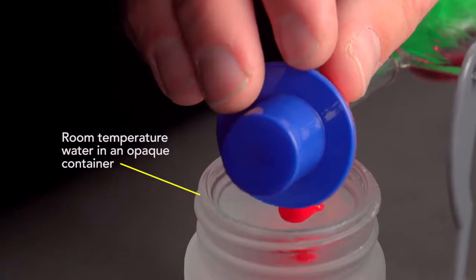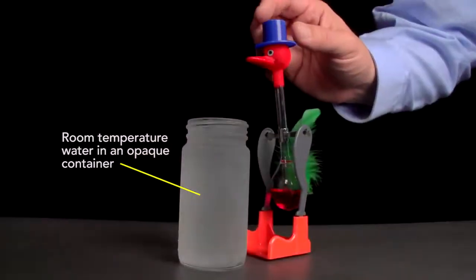Wet the bird's beak thoroughly with room temperature water. The opaque container makes it look chilled, but it isn't. Then stand it upright.